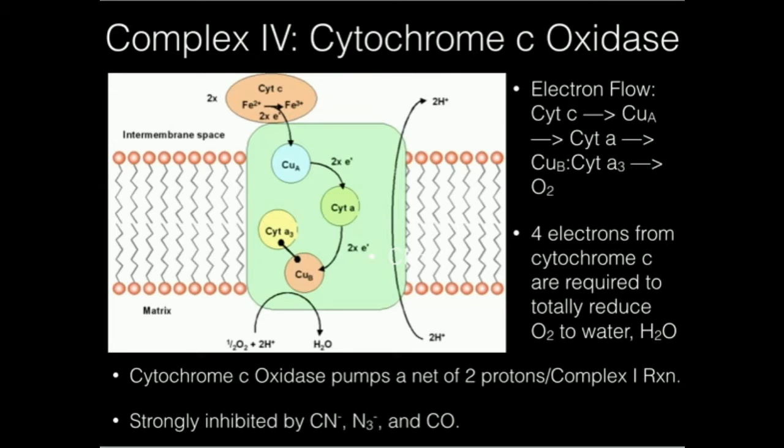Four electrons. So that means because cytochrome c can only deliver one electron at a time, it's going to take four cytochrome Cs ultimately to do that.